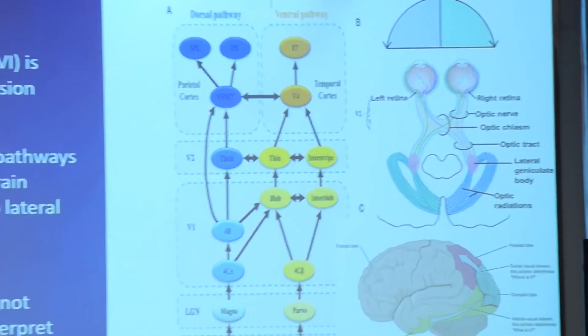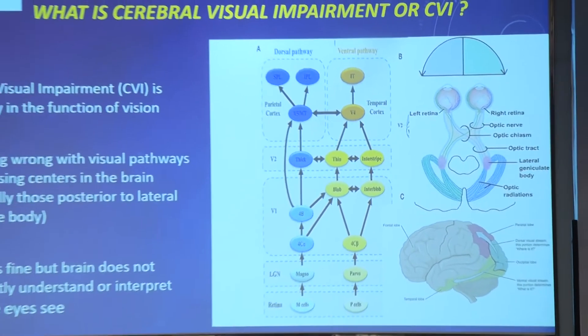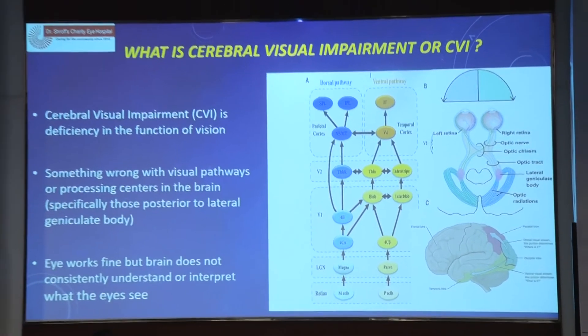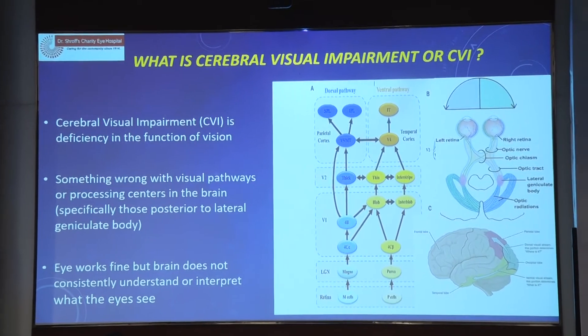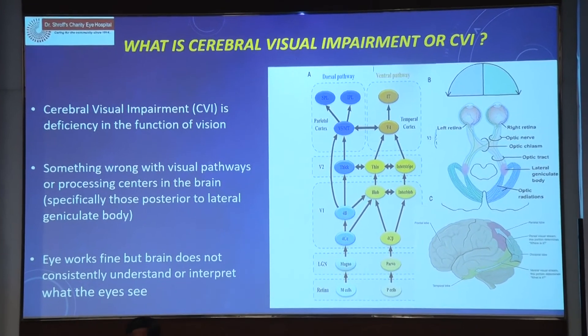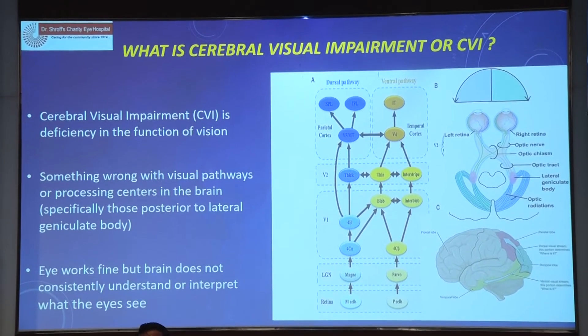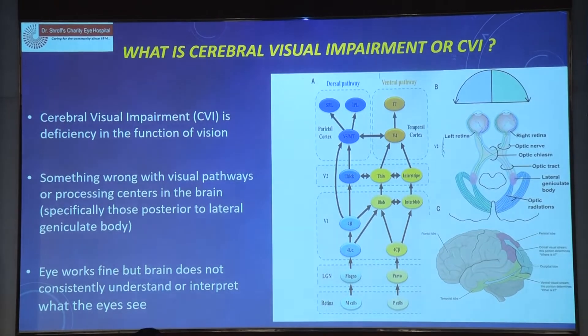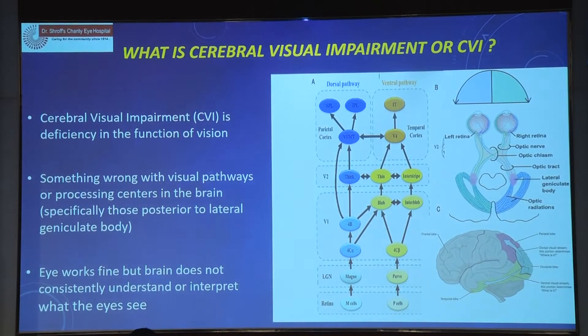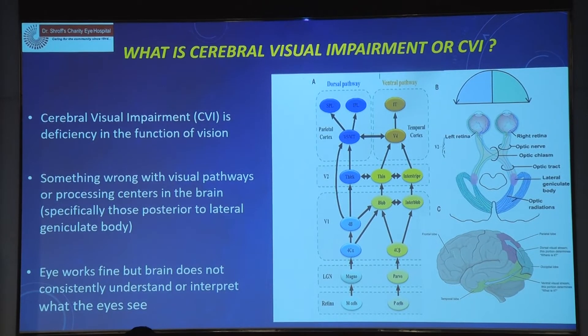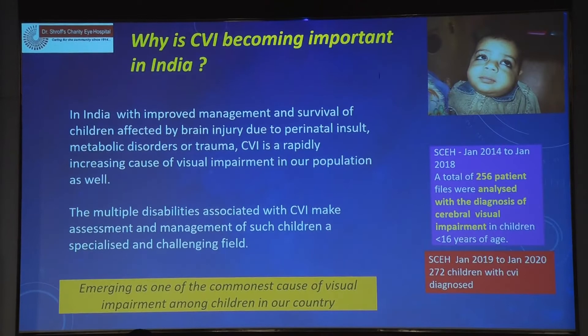Basically it is posterior to the lateral geniculate body. The eye works fine — that's what we explain to all the parents, who find it so difficult to understand why the child is not seeing though the eye is fine. The brain is not understanding or interpreting what the eye sees, and this is exactly what you will tell the parents.